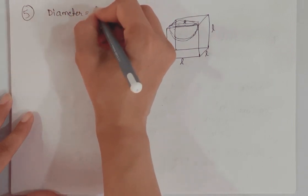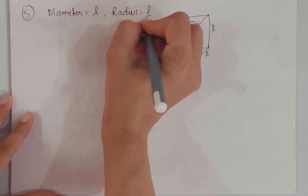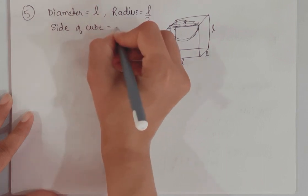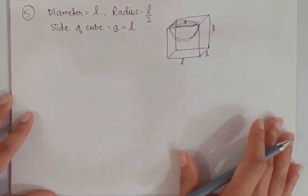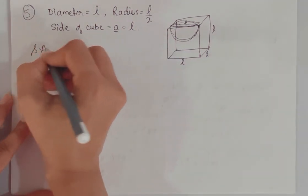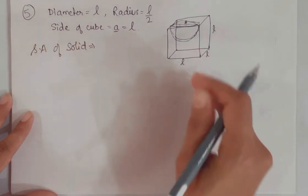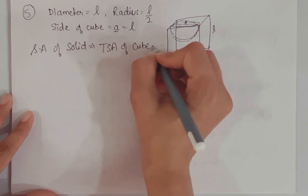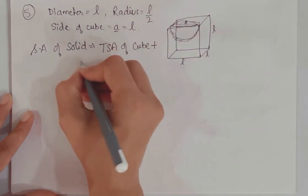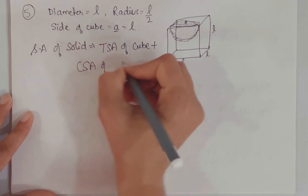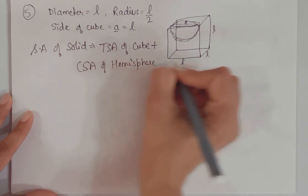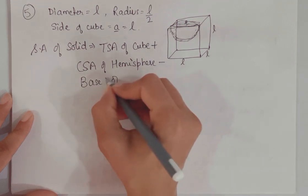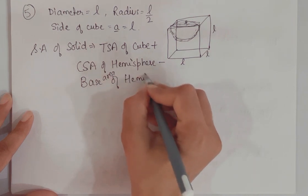Diameter is L, therefore radius = L/2. The side of the cube is also given as L. We need to find the surface area of this solid. Similar to the previous question, we use: Total Surface Area of cube + Curved Surface Area of hemisphere − Base area of hemisphere. The base is common to both, so we subtract it once.